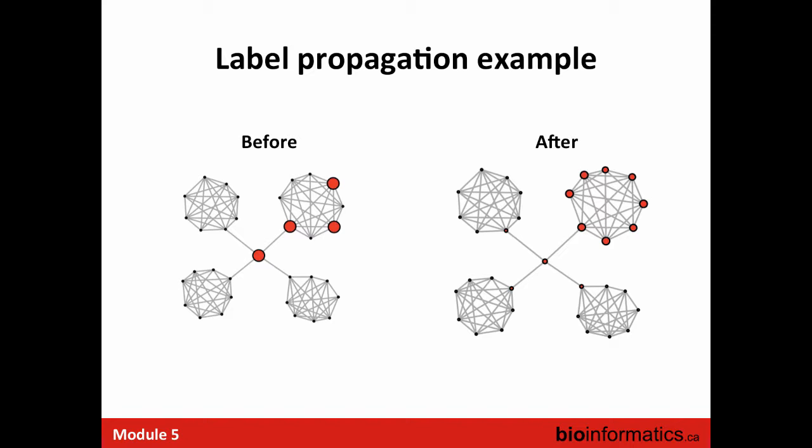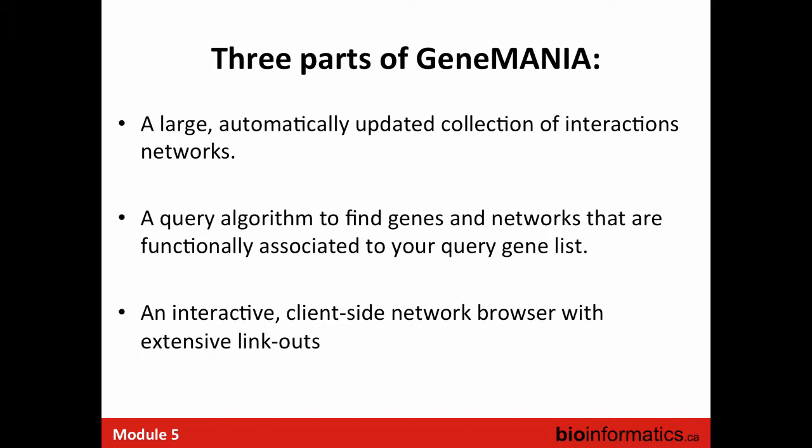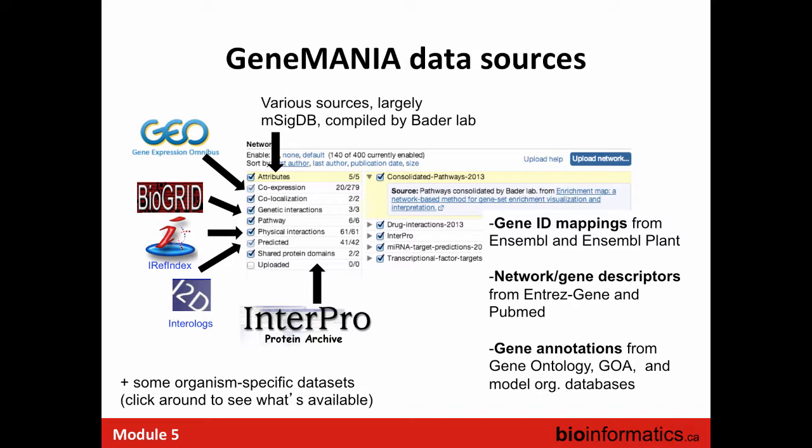So what is GeneMANIA? We have a large automatically updated collection of interaction networks — a new data release is being debugged right now; our last was about two years ago. We have a query algorithm that finds genes and networks functionally associated with your gene list, and a network browser with link-outs to source publications. Gene expression data comes largely from Gene Expression Omnibus; we find all datasets with a minimum number of conditions and build co-expression networks. They must be from a microarray format we recognize.